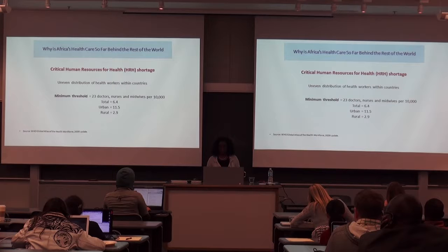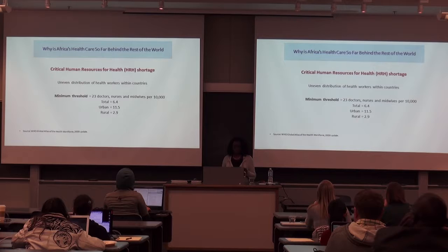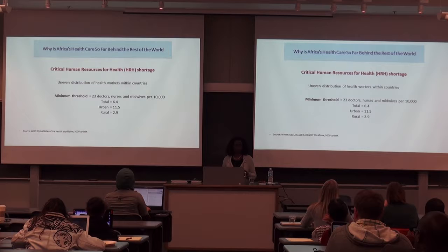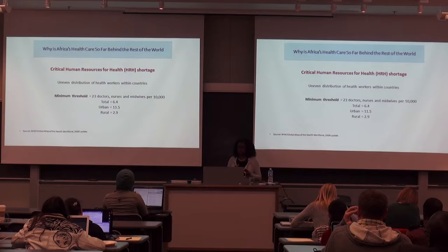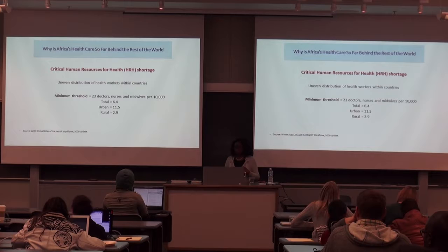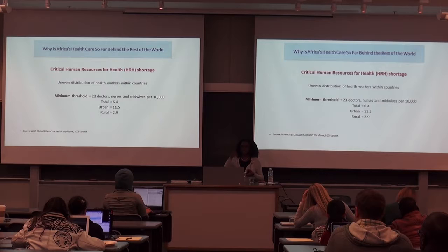Now let's talk about the critical human resource shortage for health — doctors, nurses, pharmacists, psychiatrists, anyone who works in the health sector. There's an uneven distribution of health workers. The minimum threshold should be about 23 healthcare workers per 100,000 people in the population, but in sub-Saharan Africa it's only 6.4. Going from 23 to 6.4, you can see how highly inadequate that is.